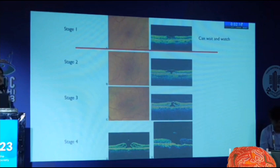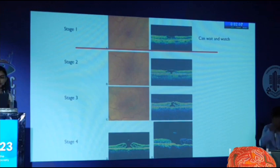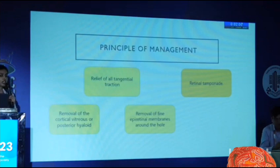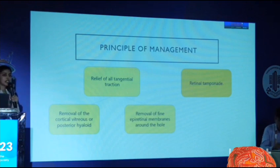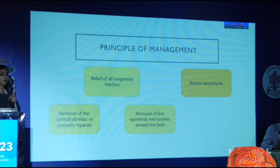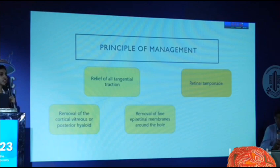Anything beyond stage 2, which is a full thickness macular hole with or without a posterior vitreous detachment, we go ahead with surgery. There are two main principles: first, to relieve all the tangential traction — either by removing the vitreous condensation or by epiretinal membrane removal. The second principle is to provide a retinal tamponade using gases so that the anatomical opposition attained with surgery is maintained.